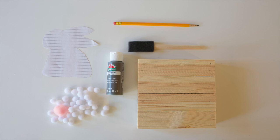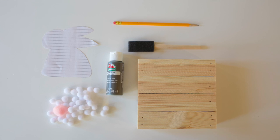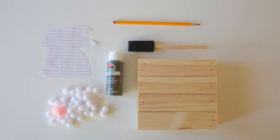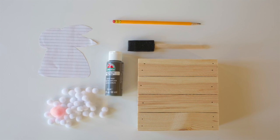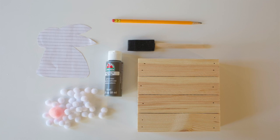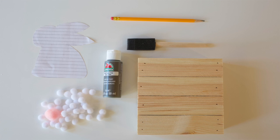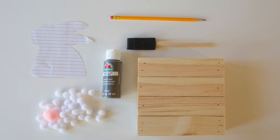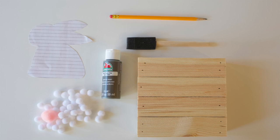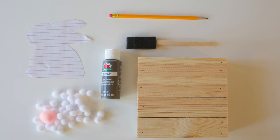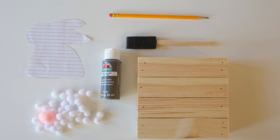And what you're going to need to make this is a canvas. It's a palette canvas is what it's called. And then you're going to need a bunny silhouette and a pencil, pewter gray acrylic paint and a paintbrush. You're also going to need some small white pom poms and a larger pink one for the tail.